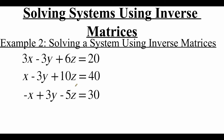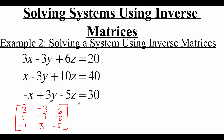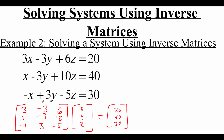Now we have a three-variable system with x, y, and z, but the process is exactly the same. The first thing we're going to do is build our coefficient matrix. Across the top row we have 3, negative 3, 6; the middle row has 1, negative 3, 10; and the bottom row has negative 1, 3, negative 5. In our variable matrix we have x, y, and z. The answer matrix on the right-hand side has 20, 40, and 30. This coefficient matrix is matrix A, the answer matrix is matrix B, and to solve we take the inverse of A times matrix B.